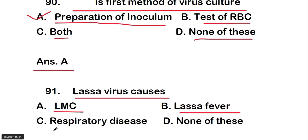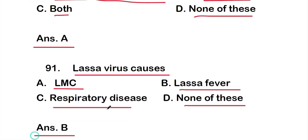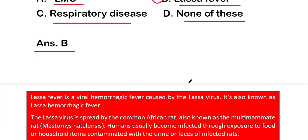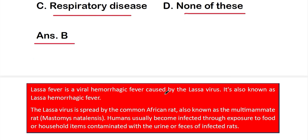Question number 91: Lassa virus causes option B — Lassa fever. Lassa fever is a viral hemorrhagic fever caused by the Lassa virus, also known as Lassa hemorrhagic fever. The Lassa virus is spread by the common African rat, and humans usually become infected through exposure to food or household items contaminated with the urine or feces of infected rats.